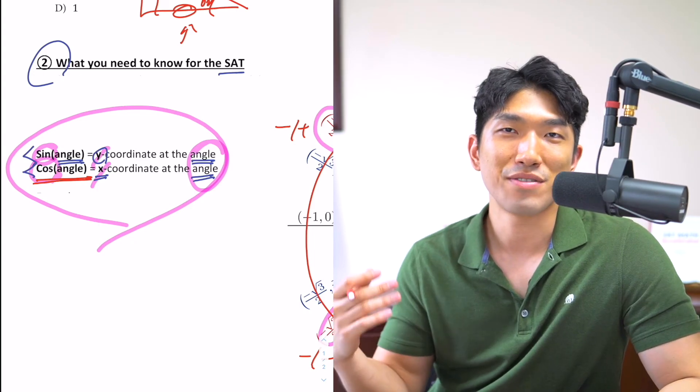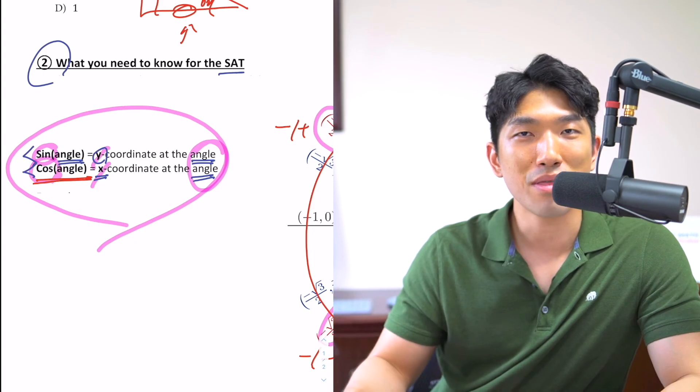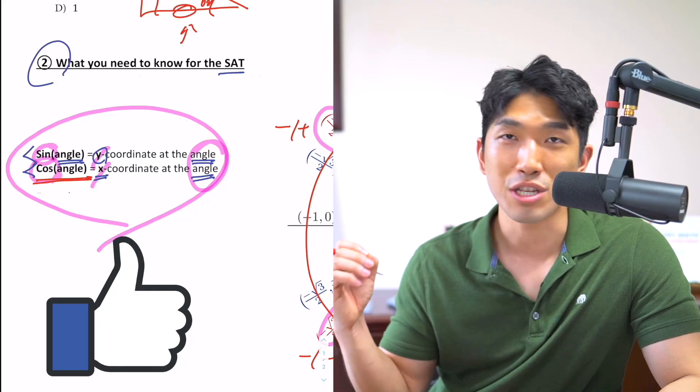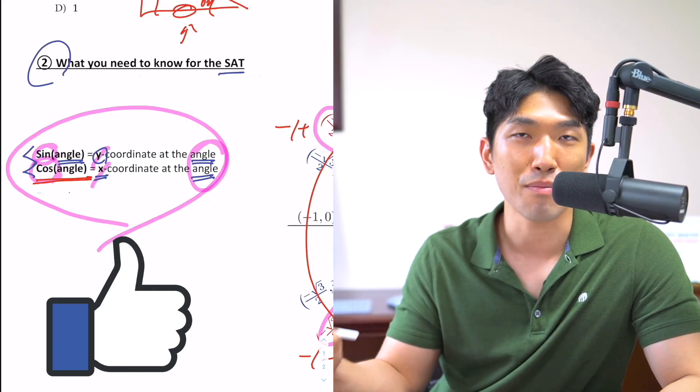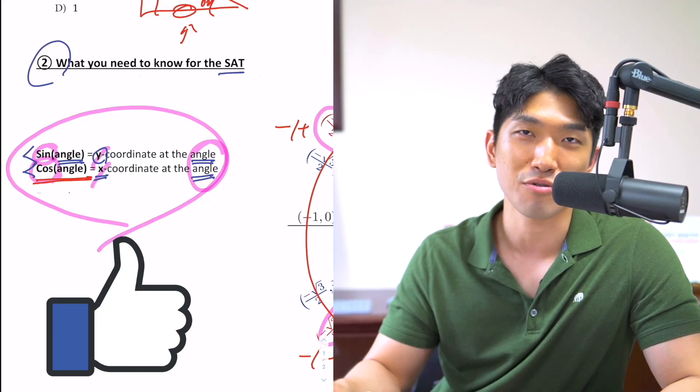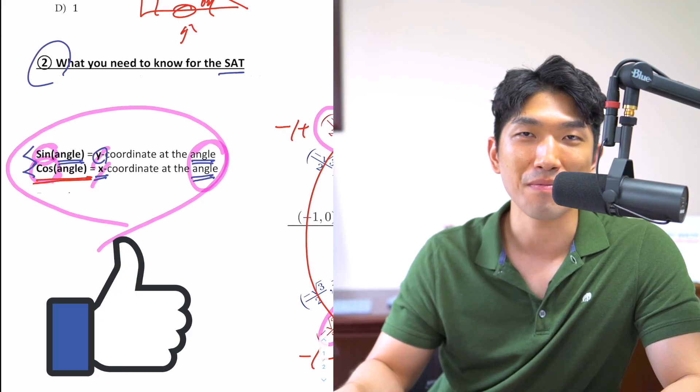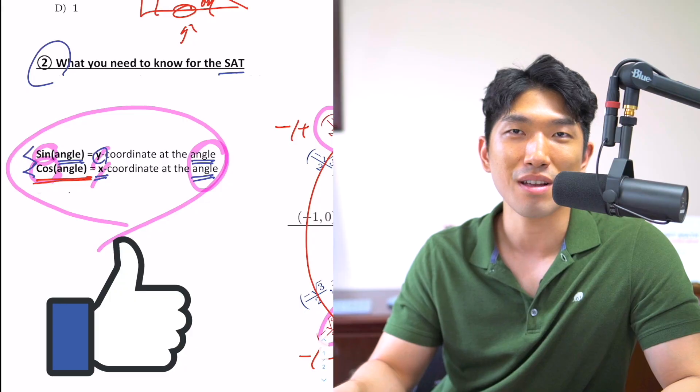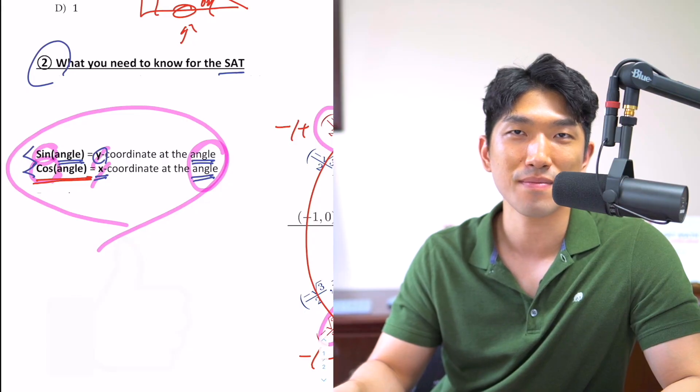If you want to get every single unit circle question right, memorize the unit circle to the point where you can recall it within 10 seconds and know how to interpret cosine or sine of an angle. If you can do that, you'll never miss a question and you'll get a higher score on your next SAT. If you found this video helpful, give it a thumbs up, and if you want to score high on the math section, subscribe to the channel.